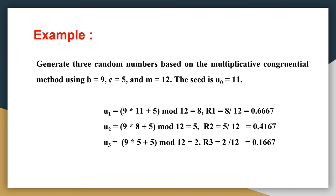To obtain three random numbers r1, r2, r3, we first need to find u1, u2, and u3. To obtain u1, we apply: b × u(n-1) + c mod m. With b = 9, u0 = 11, and c = 5, we apply 9 × 11 + 5, then perform the modulus operation with 12. We get u1 = 8. Then r1 = 8 / 12 = 0.667.